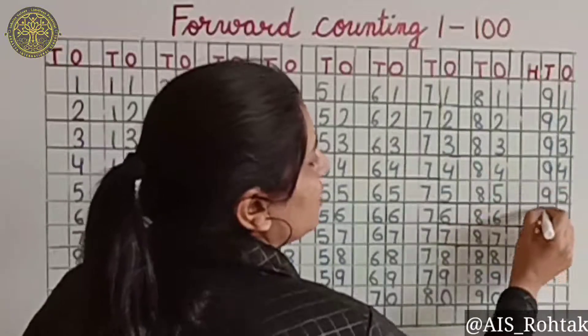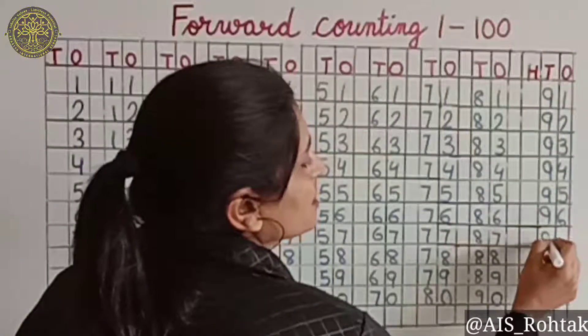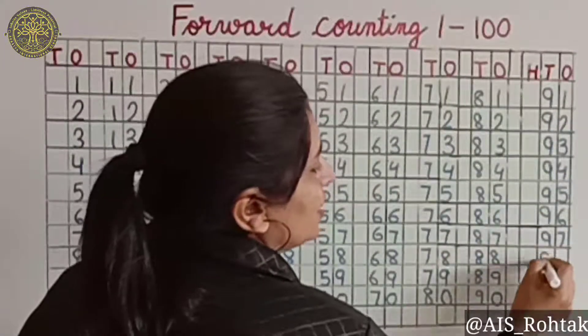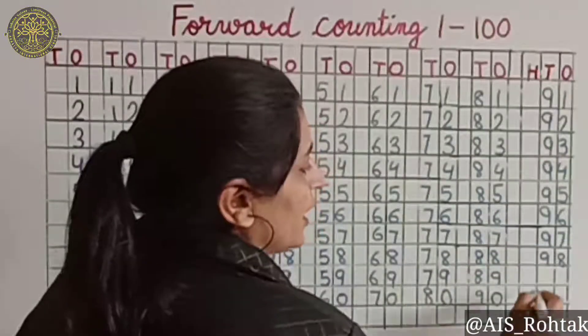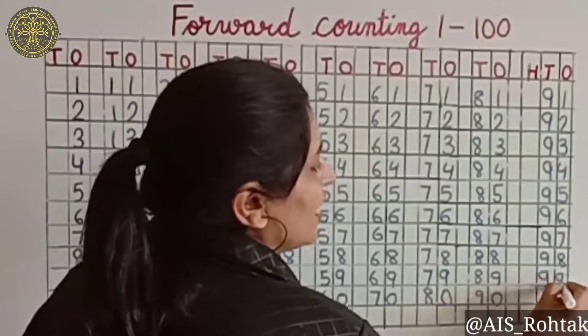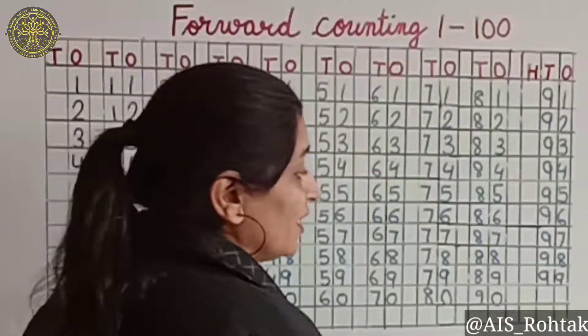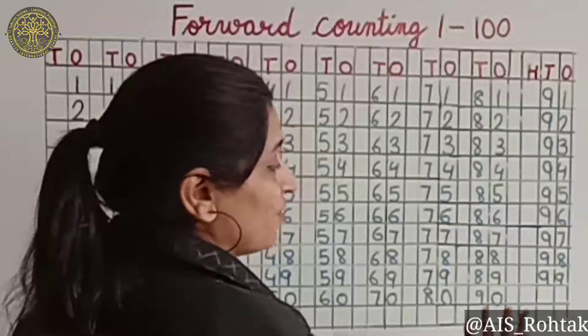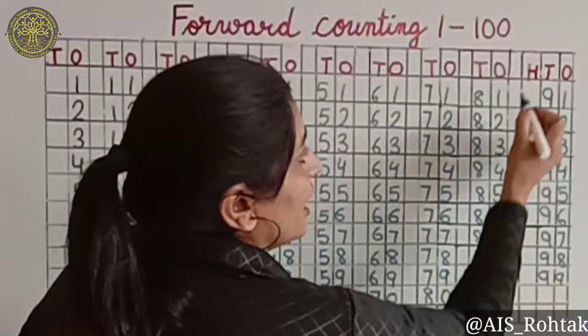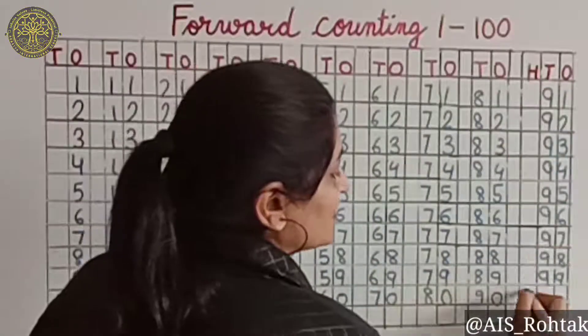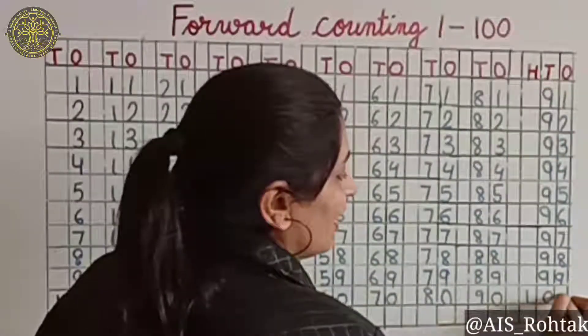95, 96, 97, 98, 99. And here comes hundred, and hundred has three digits. H is for hundred.